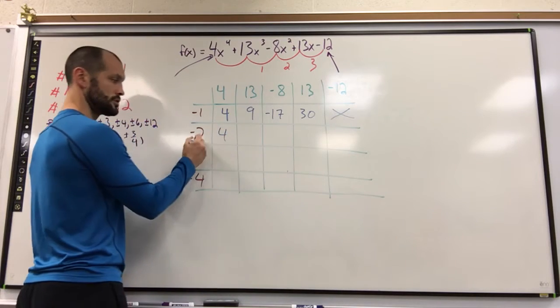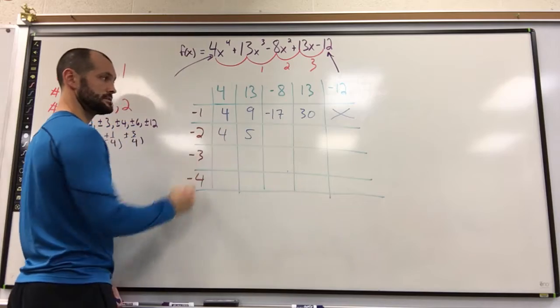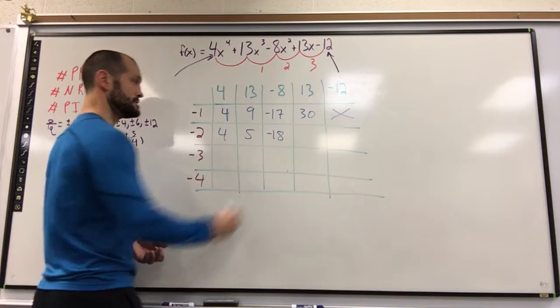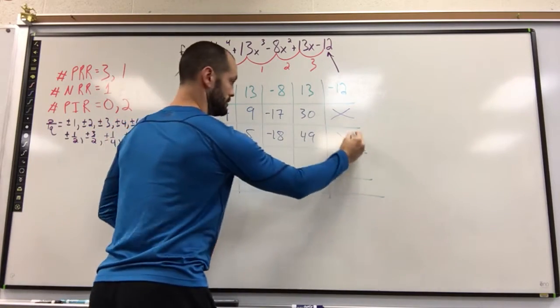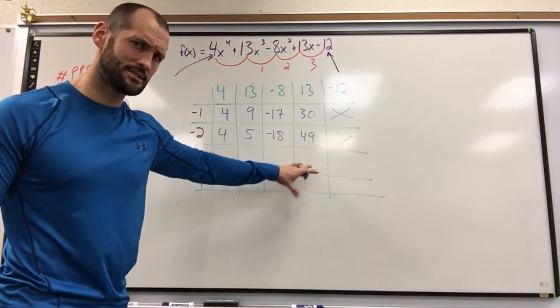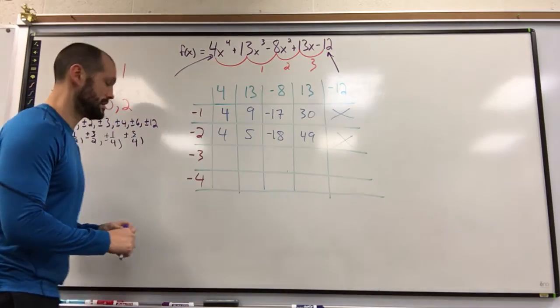4 comes down. 4 times negative 2, negative 8, giving me 5. 5 times negative 2, negative 10, giving me negative 18. Negative 18 times 2, 36, giving me 49. I know that's not going to work out. Next. You see how this is a little faster than having to rewrite the synthetic division every time? Hopefully you find it as helpful as well.